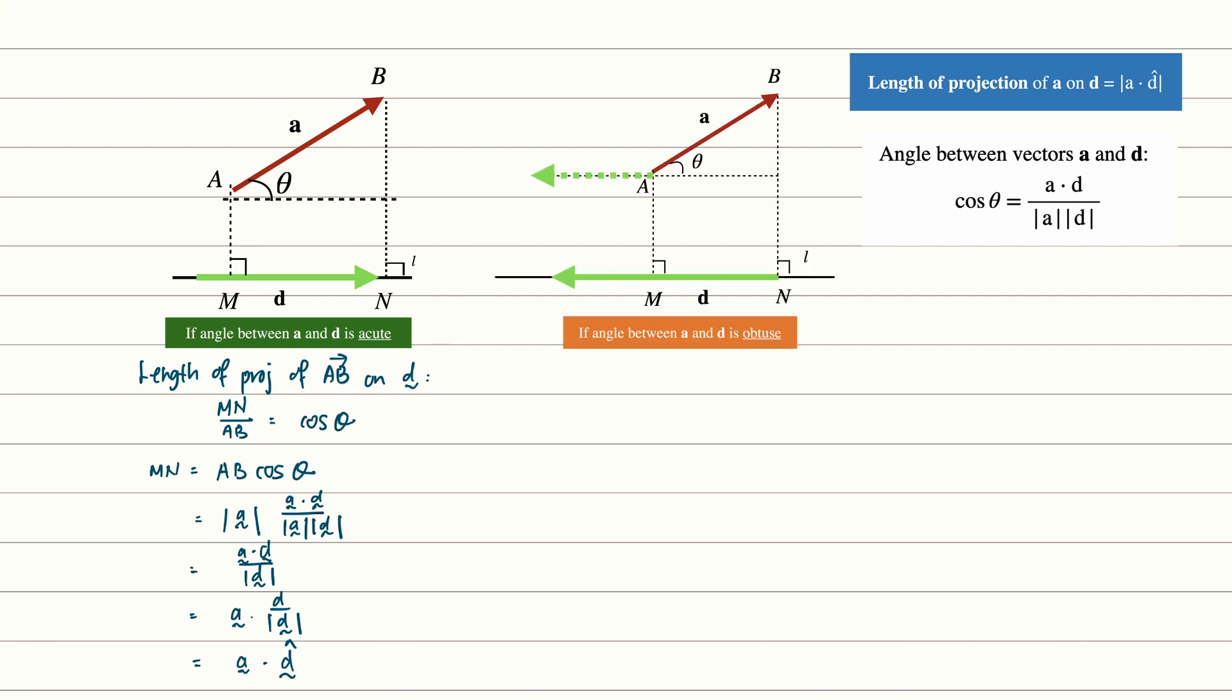But what if the angle between a and d is obtuse and the length of projection of ab on d is mn equals to ab cosine 180 degrees minus theta. Now recall that cosine 180 degrees minus theta is negative cosine theta. Now we will then have negative ab cosine theta. Simplifying we will then have negative mod a, a dot d over mod a mod d. And we will then have minus a dot unit vector of d.